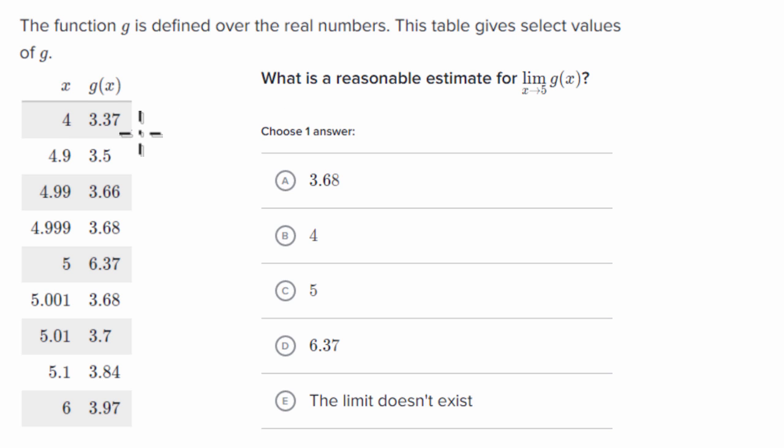So pause this video, look at this table. It gives us the x values as we approach five from values less than five, and as we approach five from values greater than five. It even tells us what g of x is at x equals five. And so, given that, what is a reasonable estimate for this limit?